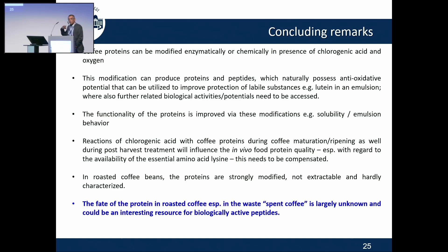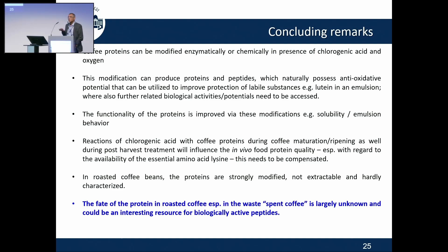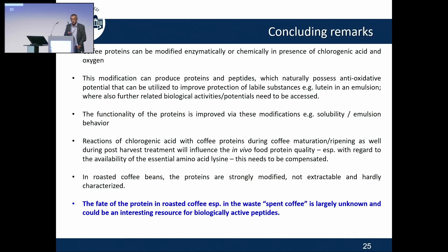Coffee proteins can be modified enzymatically — using polyphenol oxidase — or chemically by just changing the pH. The modification occurs to proteins and peptides, giving possibilities to change colors of food systems, and functionally improving solubility and emulsion activity. Keep in mind the Maillard reaction occurs with amino groups — and I think proteins are partly integrated in those brown-colored pigments, which have antioxidant capacities, and nobody has looked at it. There's a big potential to check spent coffee and find out what amino acids are modified and explore new uses for spent coffee.